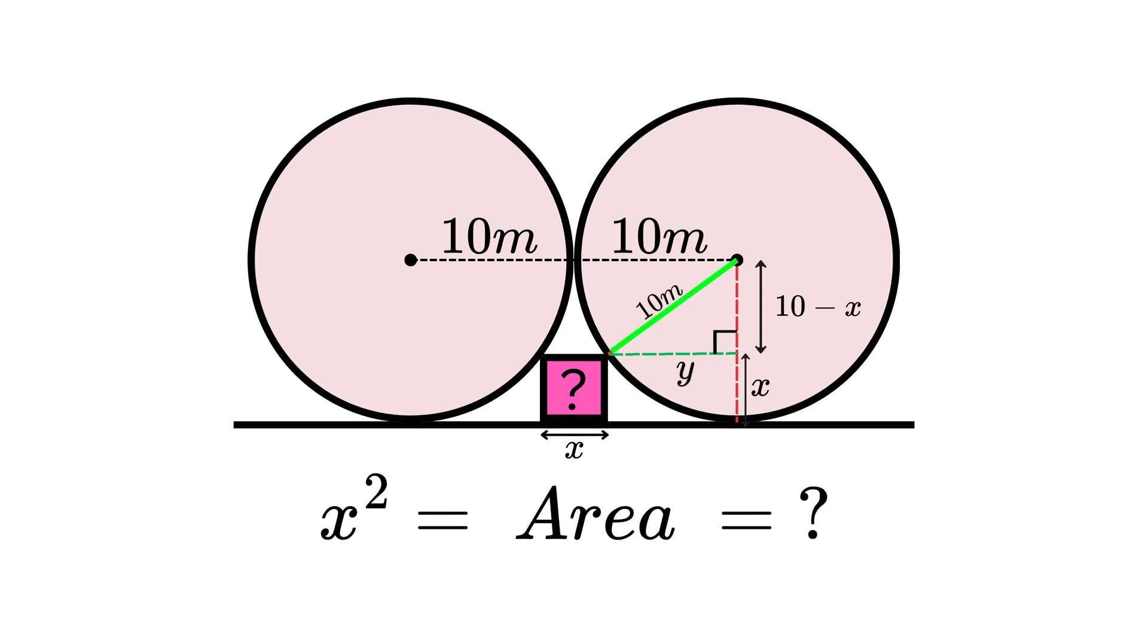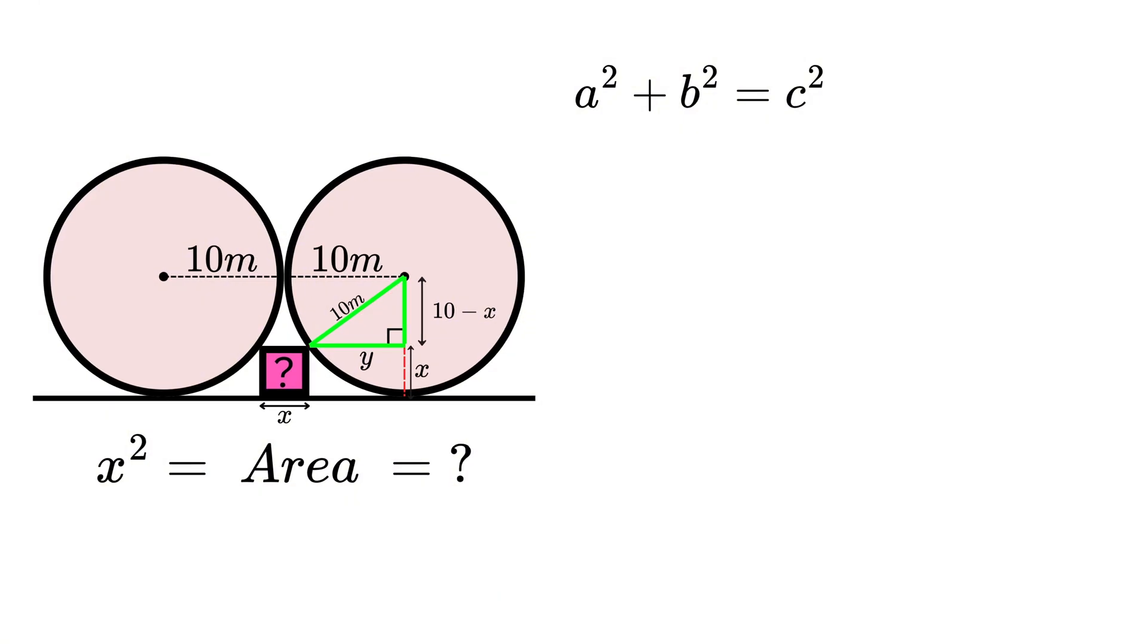Now that we have values for all three sides of our right angle triangle, we can use Pythagoras's theorem where a² equals y², b² equals (10-x)², and c² equals 10². Our equation reads y² + (10-x)² = 10². When we multiply out the brackets (10-x)(10-x), we get x² - 10x - 10x + 100.